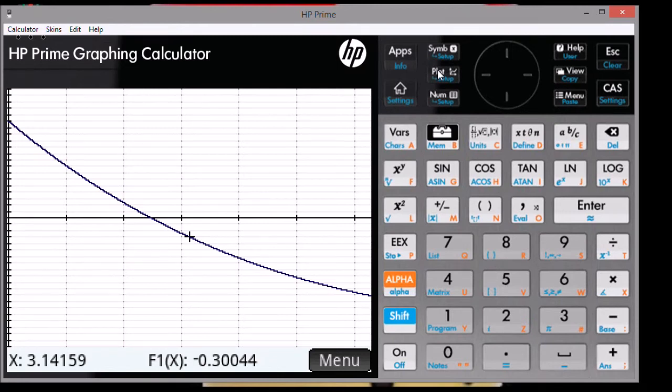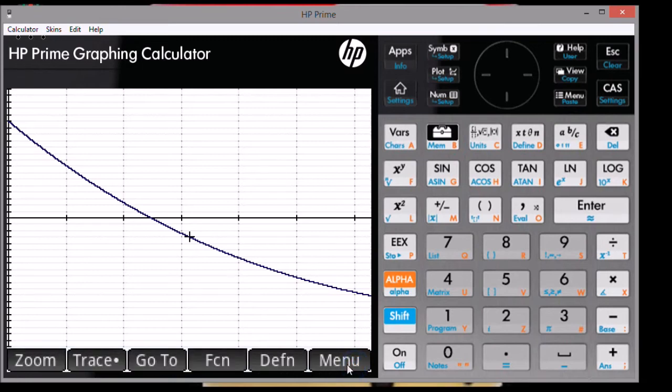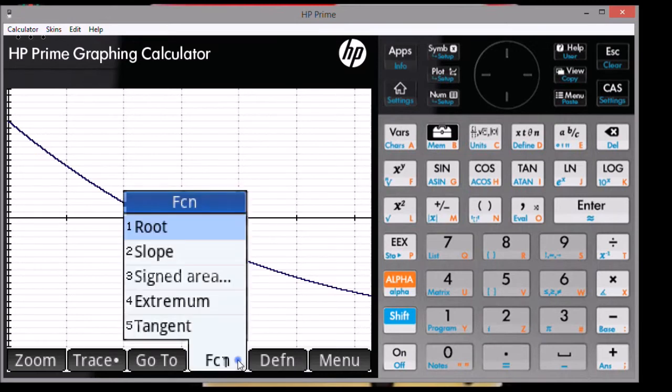Now to calculate the integral. See this menu soft key on the bottom of the screen? We're going to click on that and then we're going to get the zoom trace go to function definition and menu options. We're going to click on the function FCN and then we're going to click on the third option signed area.